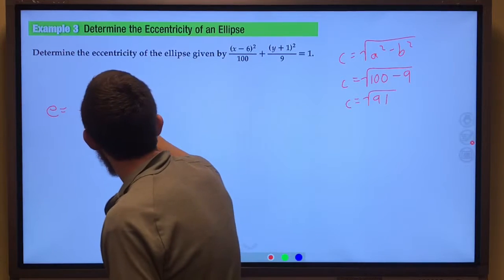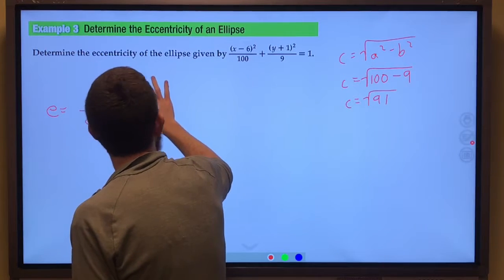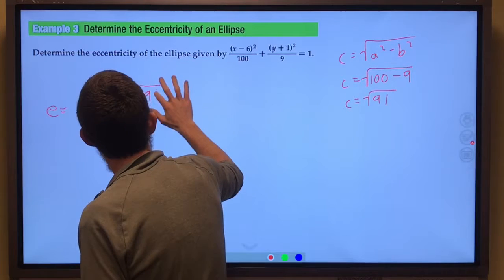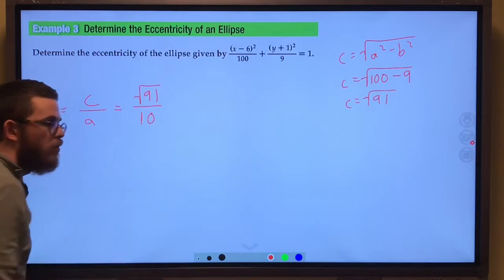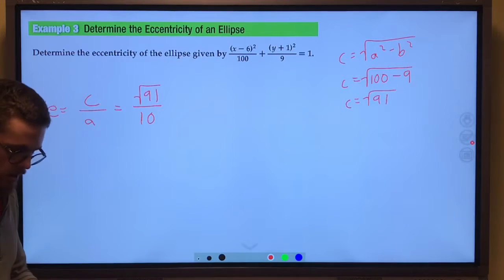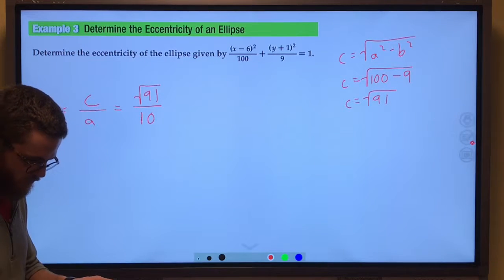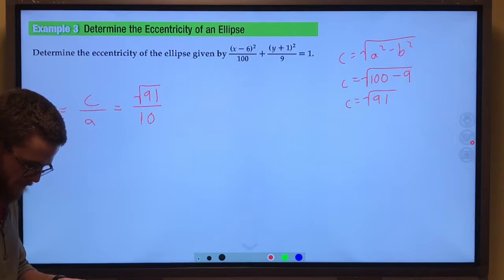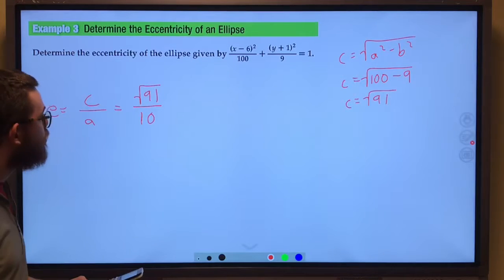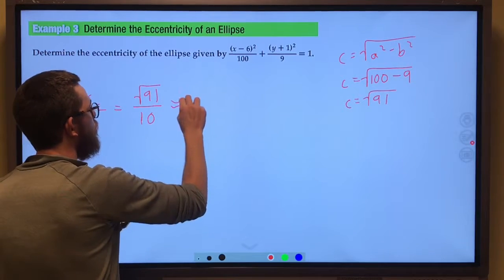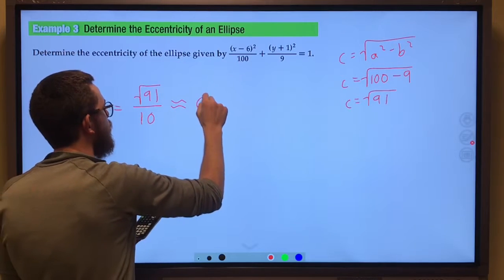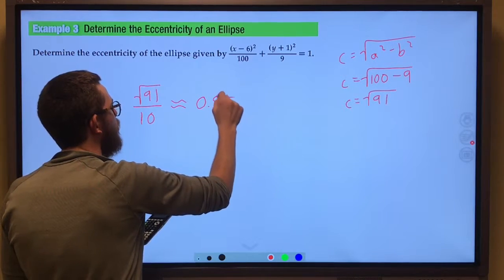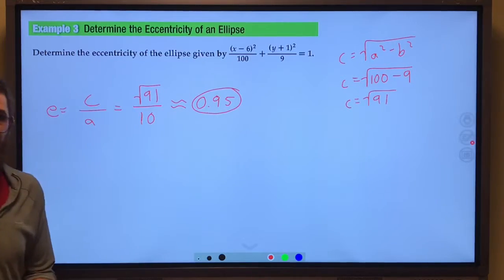And so the eccentricity would have to be the square root of 91 over 10. And if I just type that in my calculator, I get about 0.95 as our eccentricity.